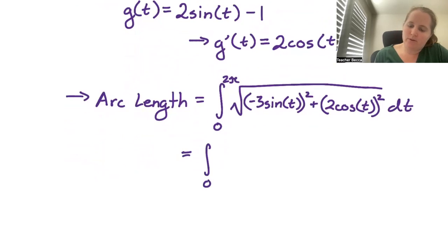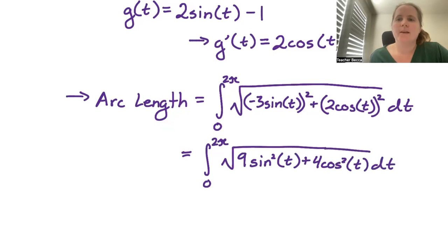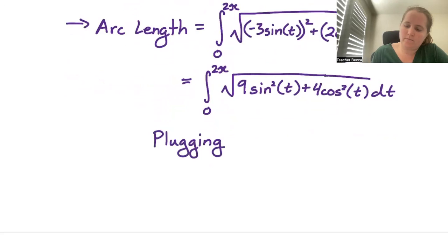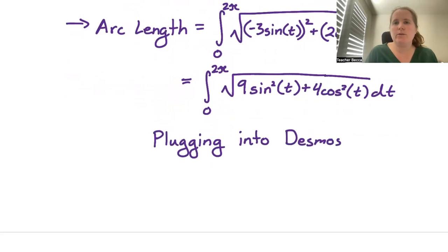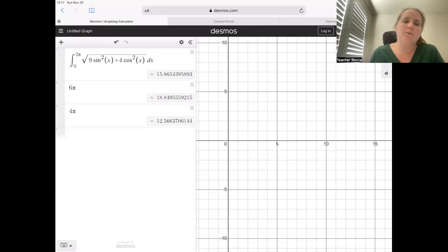For this activity, I'm not going to compute this by hand. We can plug it into Desmos. In Desmos, we have the definite integral from 0 to 2 pi of the square root of 9 sine squared x plus 4 cosine squared x dx. Desmos calculates this to be approximately 15.865.